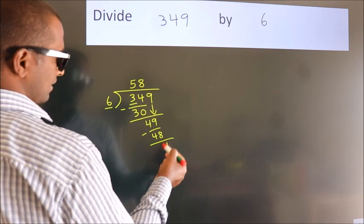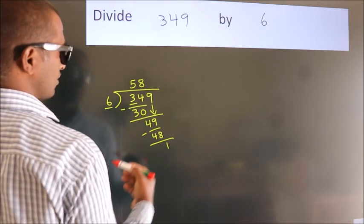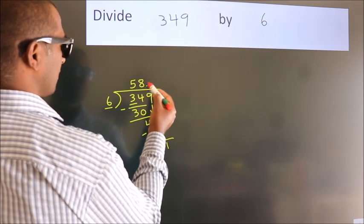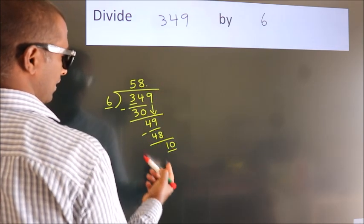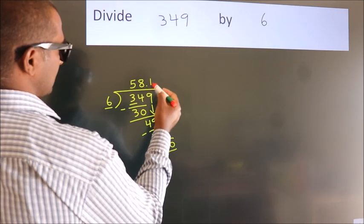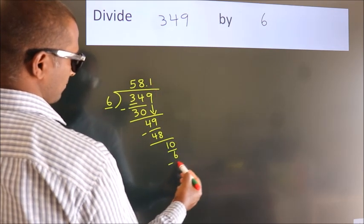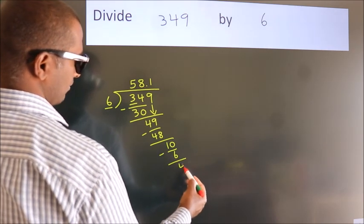After this, no more numbers to bring down. So what we do is, we put a dot and take 0. So 10. A number close to 10 in the 6 table is 6 1s, 6. Now we subtract. We get 4.